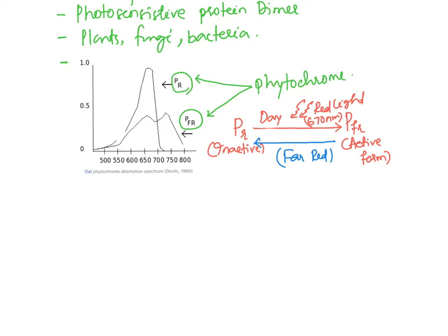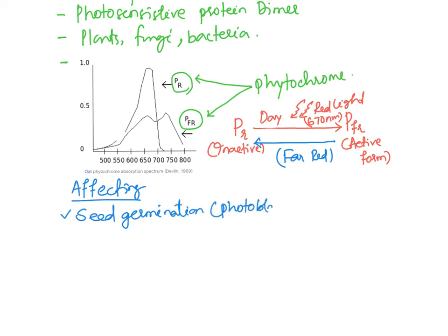The physiological processes affected by phytochrome include seed germination, which is an important process controlled by this pigment system. This relates to the concept of photoblasty in plants.